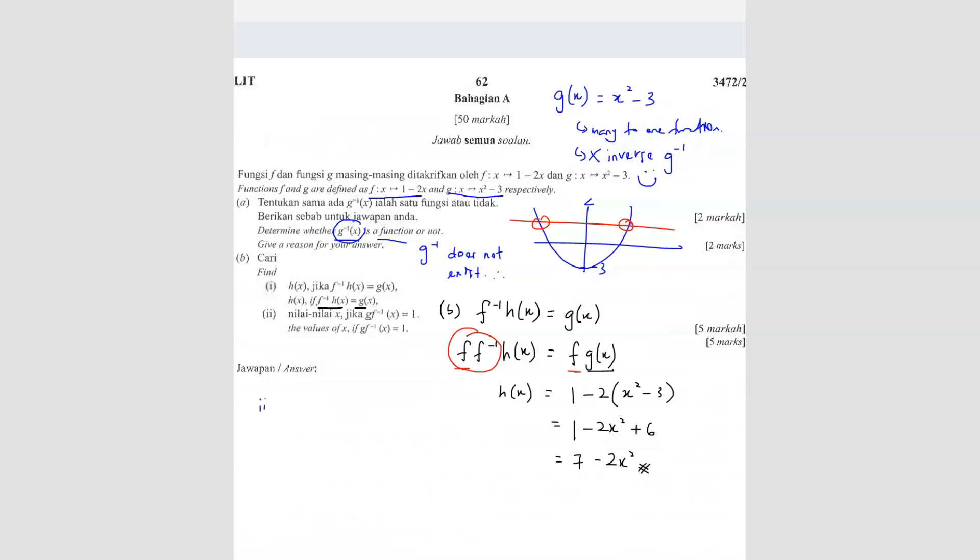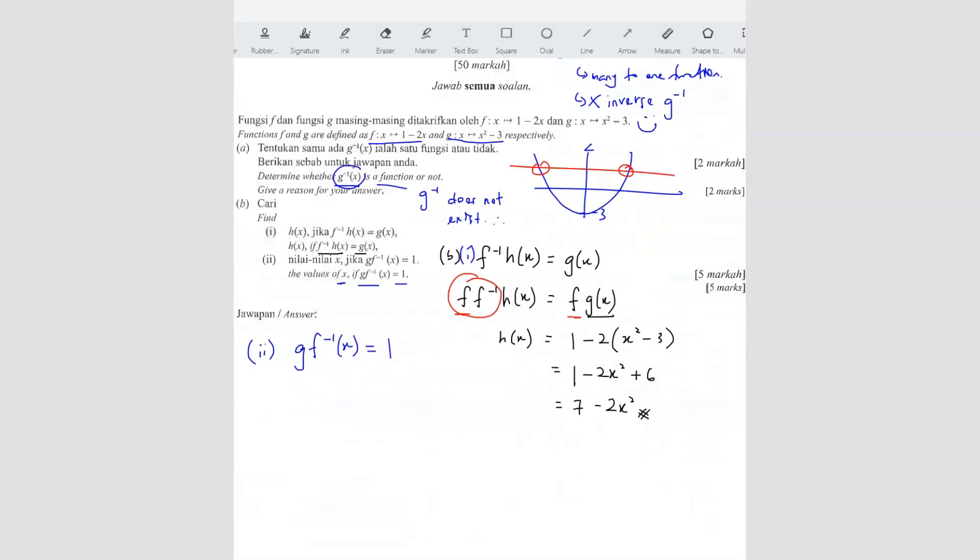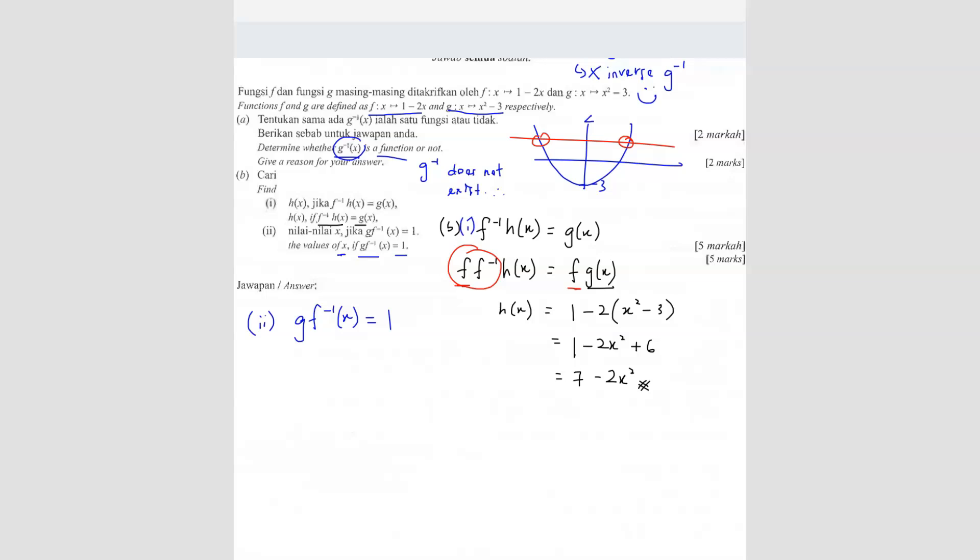The second part, b2. Find the values of x if g(f⁻¹(x)) = 1. They asked to find x. You have to substitute the f inverse. We have to find the f inverse first. We know that f(x) = 1 - 2x. If you want to find the f inverse, we let f(x) = y.